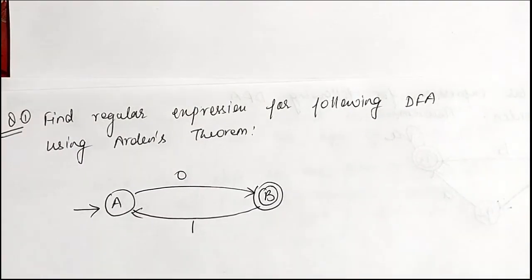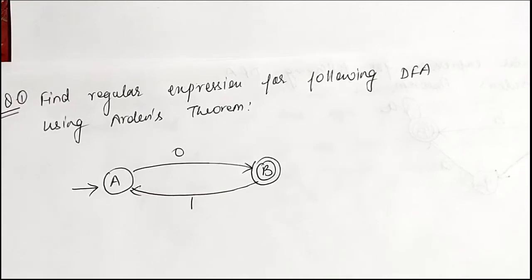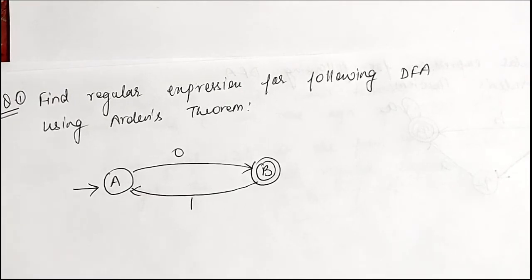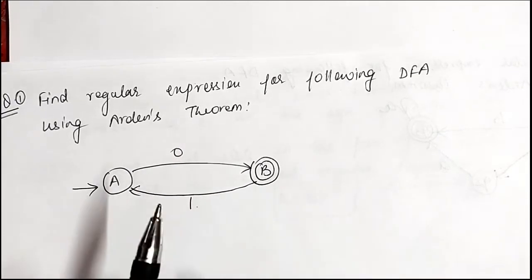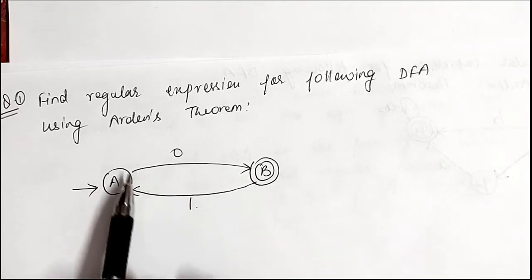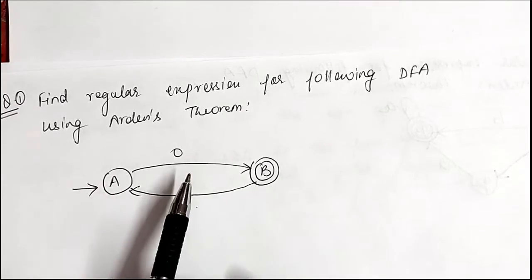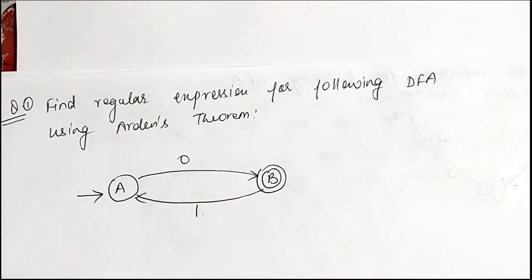We take an example: find the regular expression for the following DFA using Arden's theorem. First, check whether the conditions are met: this DFA does not contain any epsilon transition — there are only two inputs, 0 and 1 — and the DFA contains only one initial state, A. Both conditions are satisfied, so we use Arden's theorem.